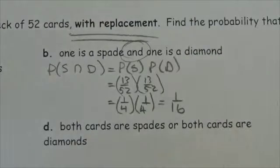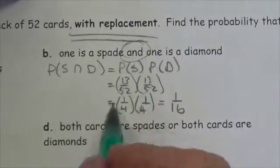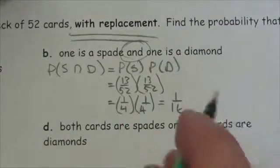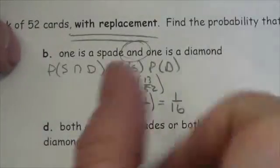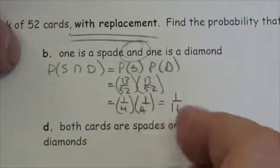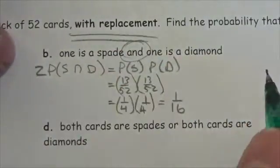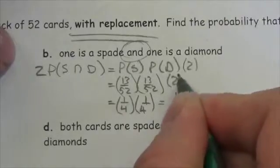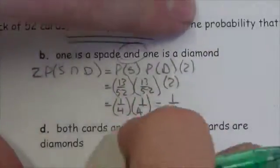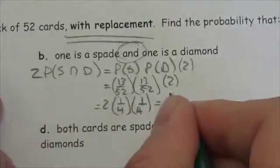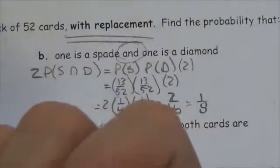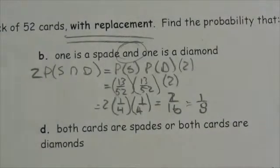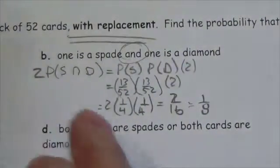However, that assumes a specific order. There are two different ways this could occur: spade then diamond, or diamond then spade. Because they're independent, the probability for each ordering is the same. So we multiply by 2, giving us 2/16, which reduces to 1/8. That's the probability that one card is a spade and the other is a diamond, since order is not important.